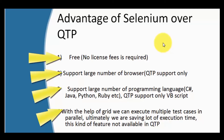The third advantage of Selenium is that we can do coding in different programming languages. With Selenium we can use Java, Python, C Sharp, Ruby, etc. But in case of QTP it supports only VBScript. Here programming language means the language we are going to use while automating the application — it does not matter what language my application is developed in.